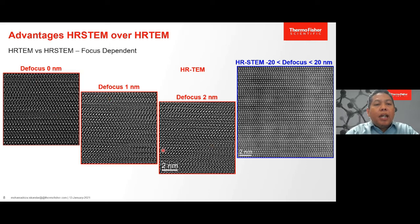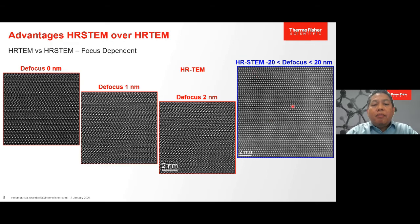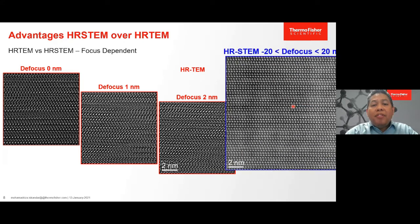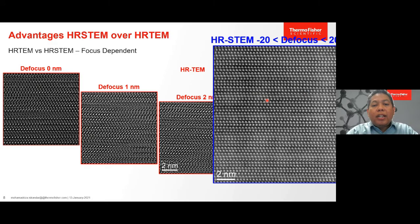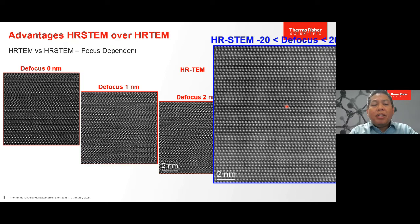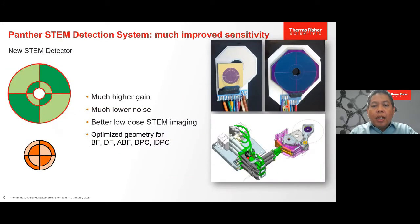In the annular bright field image, atom columns appear as dark spots compared to HAADF where they are bright spots. Now we can see where the lanthanum atoms and boron atoms are located. One of the advantages of STEM is that the image is relatively easy to interpret due to focus independence. By changing focus only about 2 nanometers, different features can show up in high-resolution TEM images. But with high-resolution STEM, even changing the focus up to 40 nanometers, we still see the same atomic columns without significant changes.